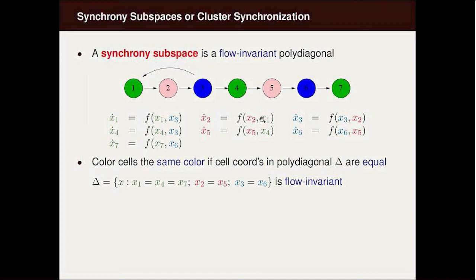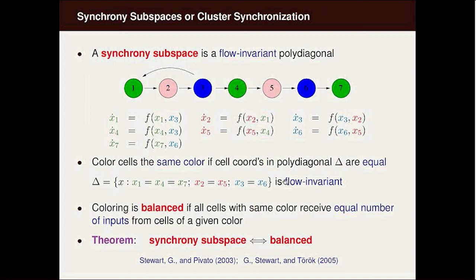The red equations are functions of red and green, and the blue equations are a function of blue and red. That is, if you take all of the green nodes and set them equal, all the red nodes and set them equal, the blue nodes set them equal, you will get a flow invariant subspace. This is true for all of the admissible vector fields associated with this network.